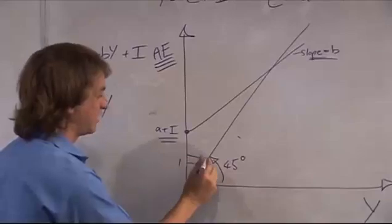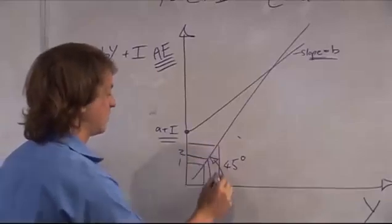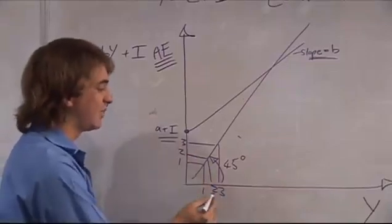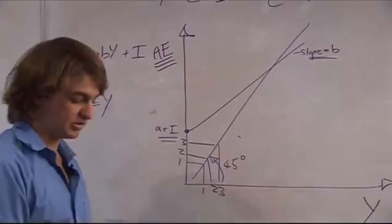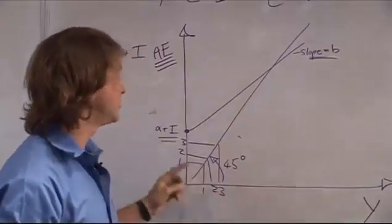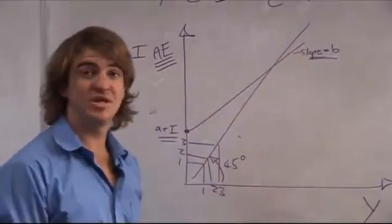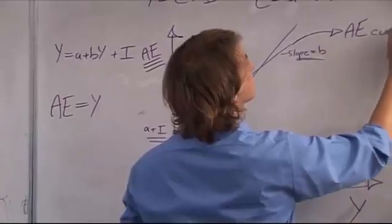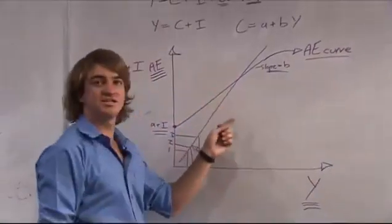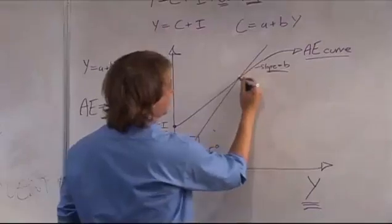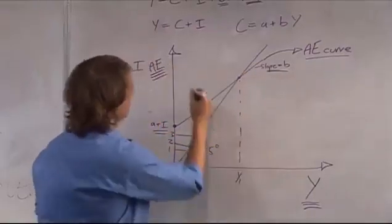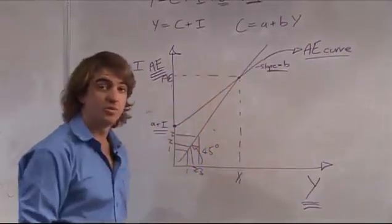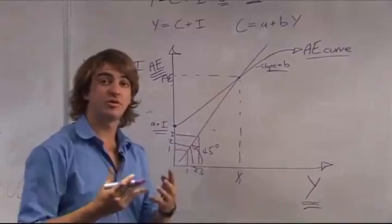At every point on this 45-degree line, AE is going to equal Y — it'll be 1 and 1, 2 and 2, 3 and 3. At every point, the value for AE and the value for Y will be the same along this 45-degree line. So if you find the intersection between the 45-degree line and the aggregate expenditure curve, that intersection is your equilibrium point, where the amount you spend on goods equals the goods that are produced.